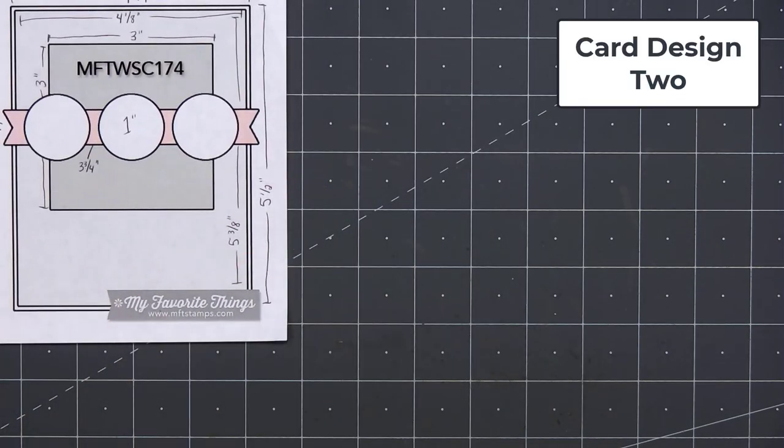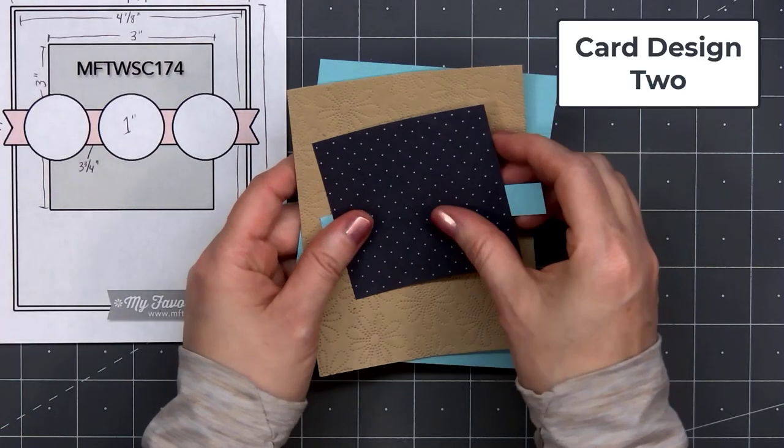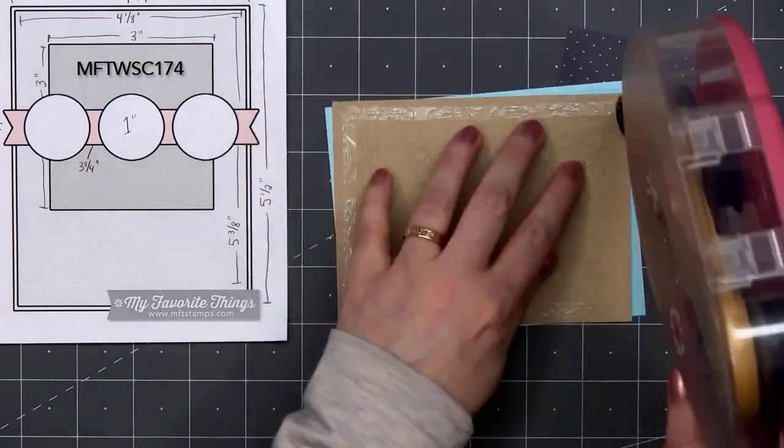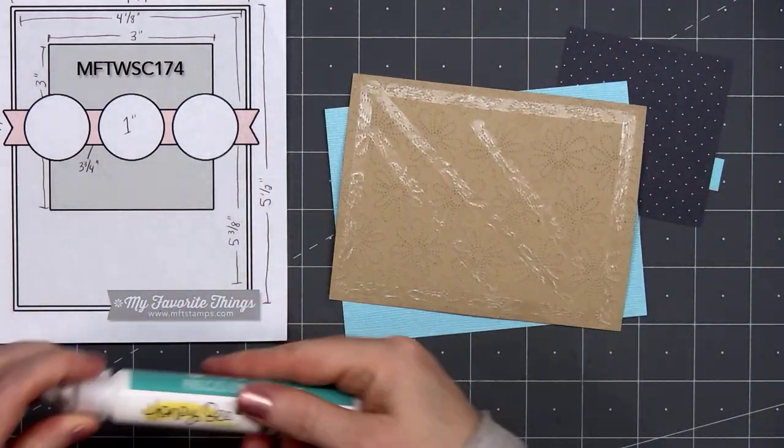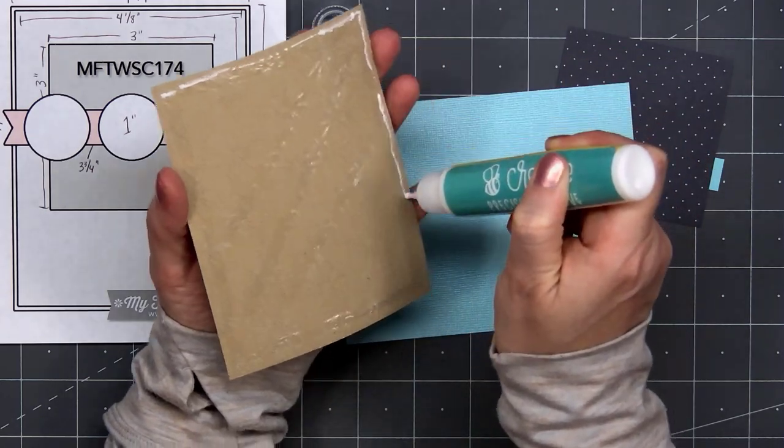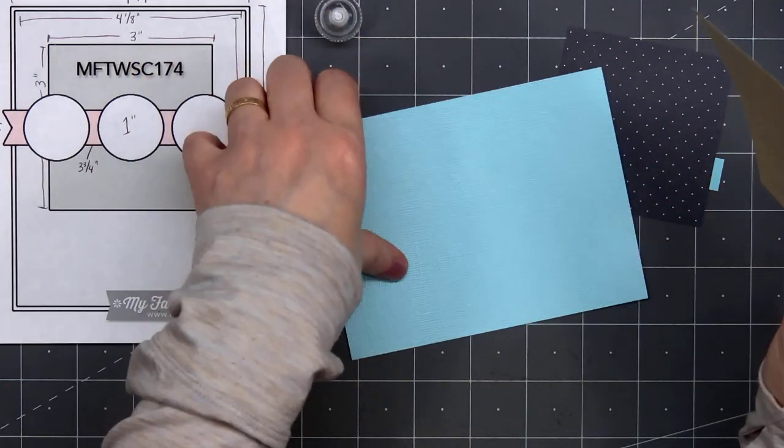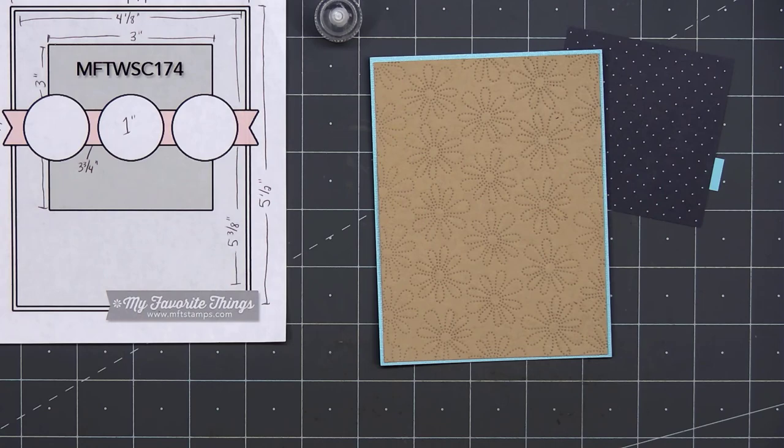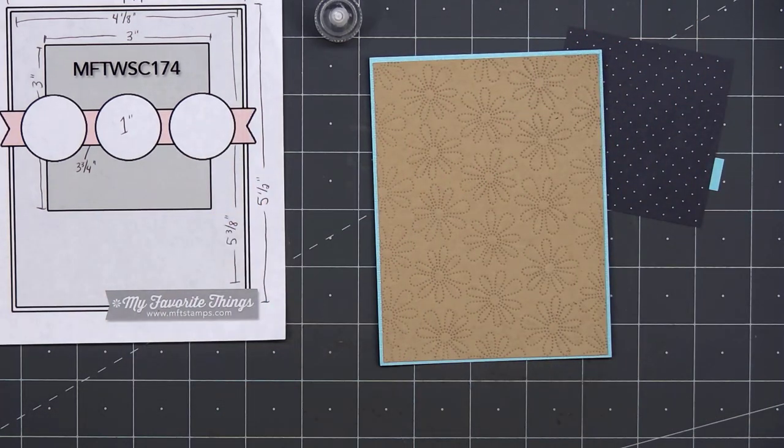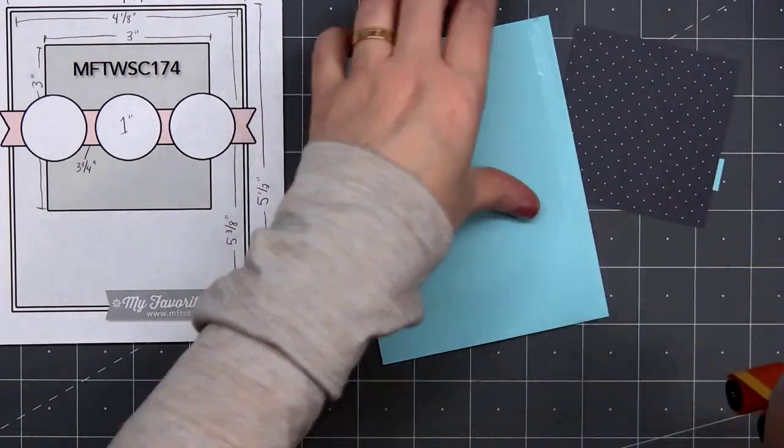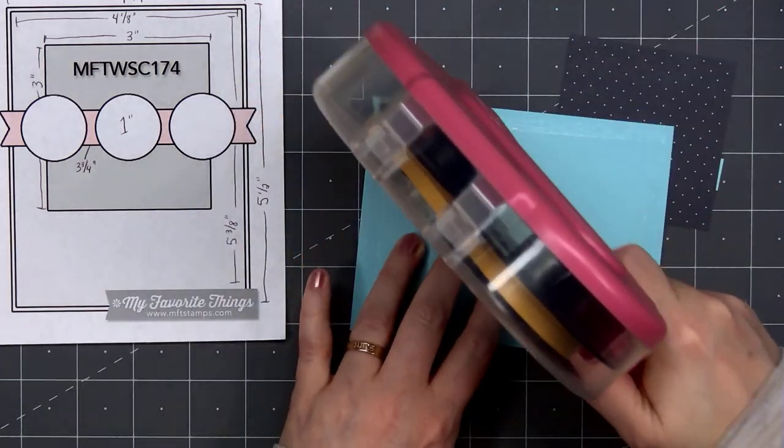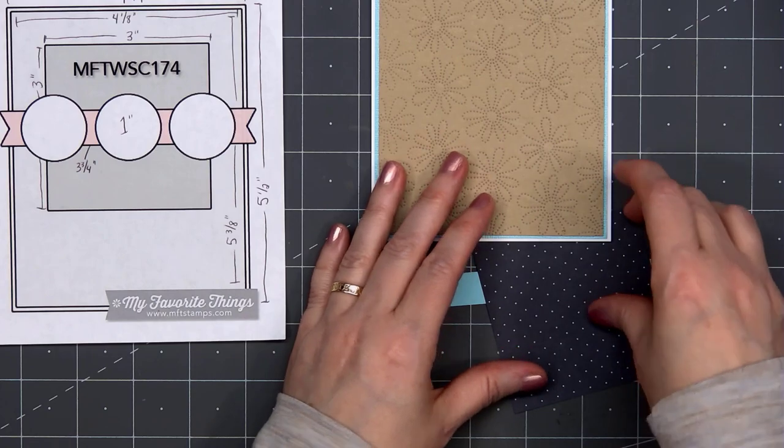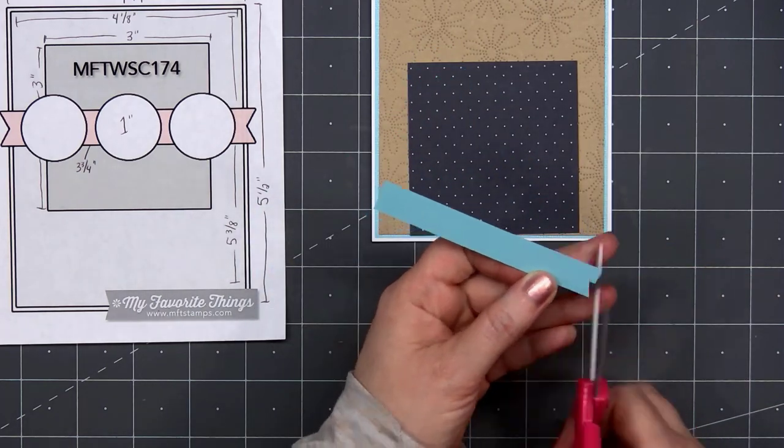Now moving on to card design number 2. The card sketch is from MFT. This is number 174. I used some Kraft cardstock for the background and added this beautiful detail using the Lazy Daisy Pierced A2 Cover Plate. I put some ATG tape on the back and also some liquid adhesive along that very outside edge. With all that pierced detail, I want to make sure that it stays in place. This blue cardstock does have a pearlescent finish. Then I'll put some more ATG tape on the back of this piece and adhere my card front onto a card base. And all of my cards in this video are American Standard A2 size, four and a quarter inches by five and a half inches.